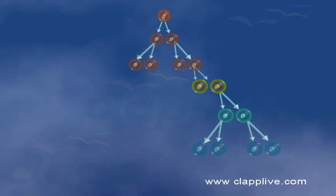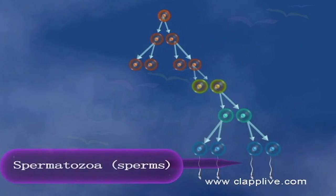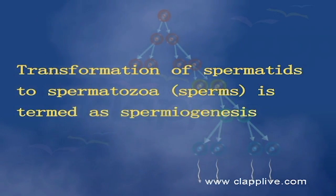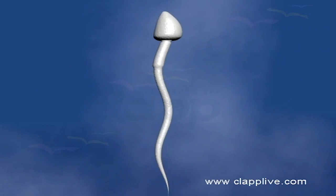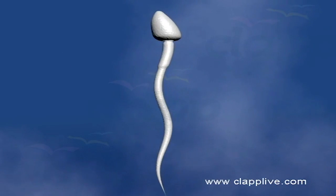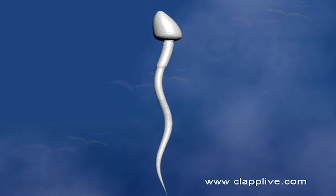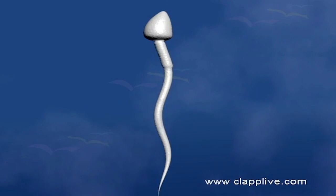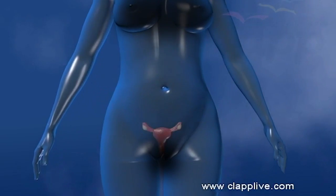The non-motile spermatids remain connected to each other by their cytoplasm. These spermatids are then transformed into motile spermatozoa or sperms. The transformation of spermatids to spermatozoa is termed spermiogenesis. After spermiogenesis, the sperm heads are embedded in the Sertoli cells, and later they detach and reach the lumen of the seminiferous tubules by a process called spermiation.